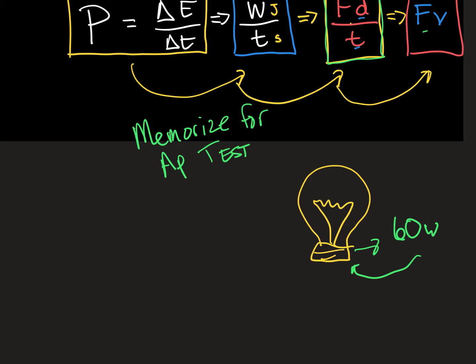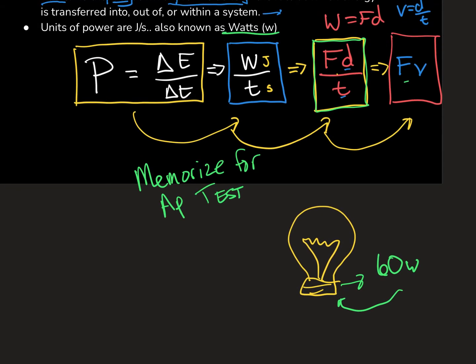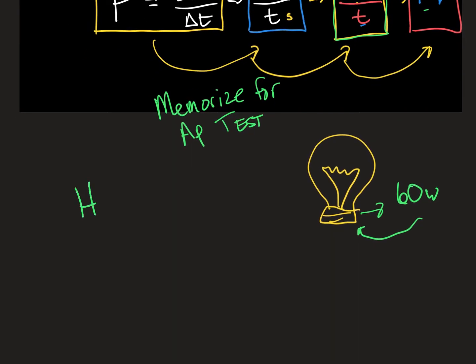Or if you're into PCs, like building computers, there's different power units. There's like 500, 600, 800 watts. That's just how much power is needed to power that computer unit. So power is used a lot in electronics and in mechanics.